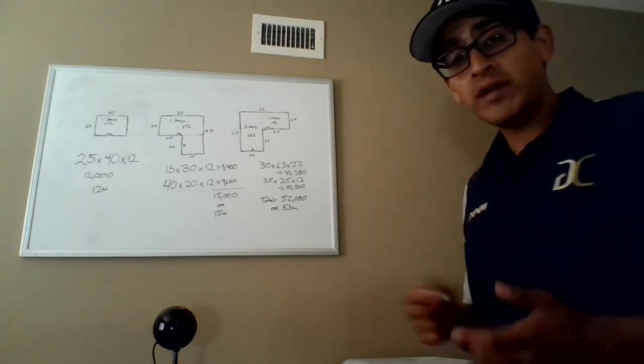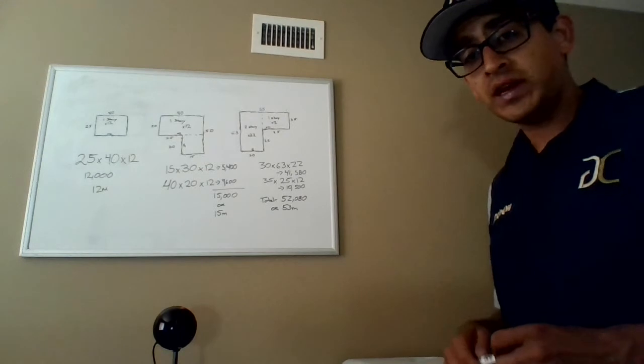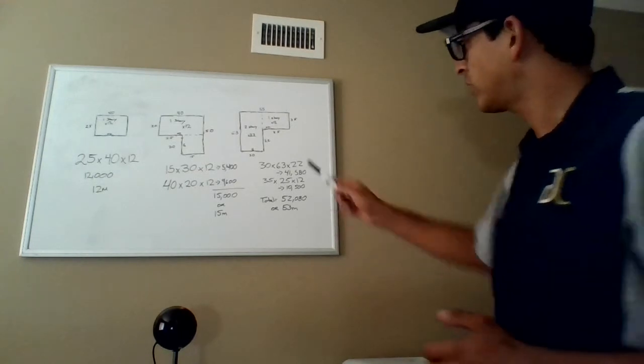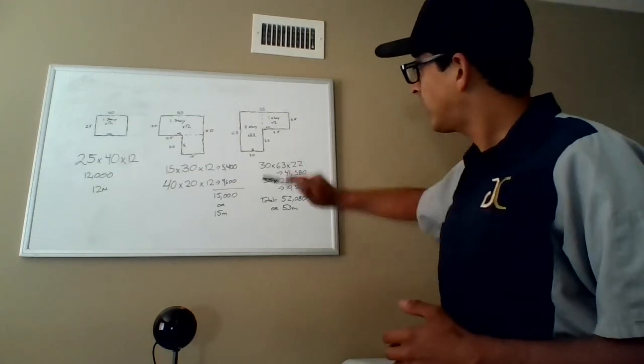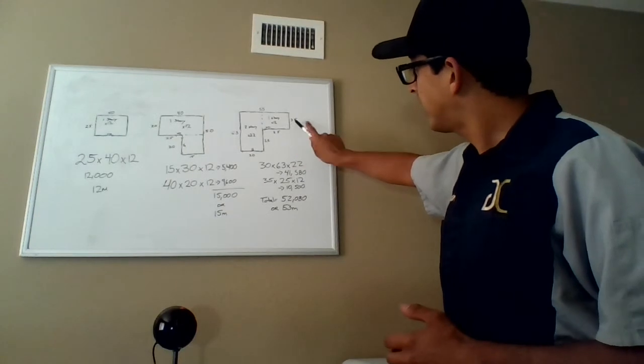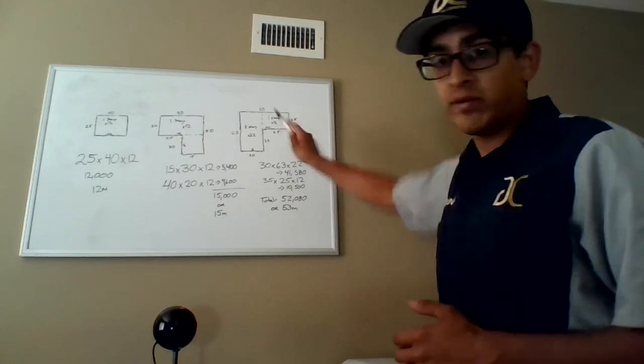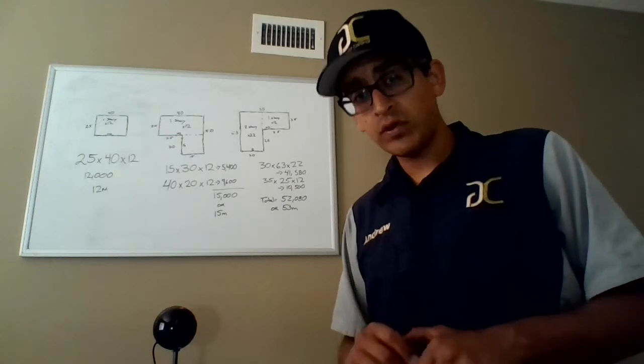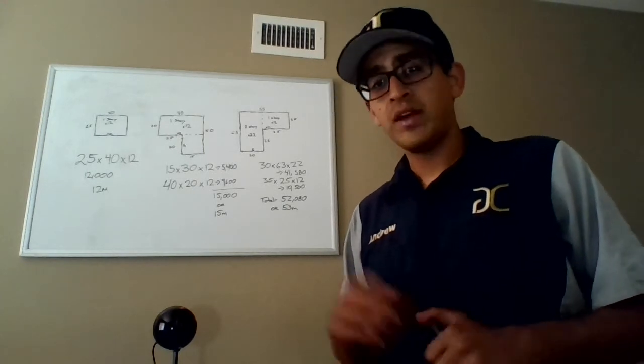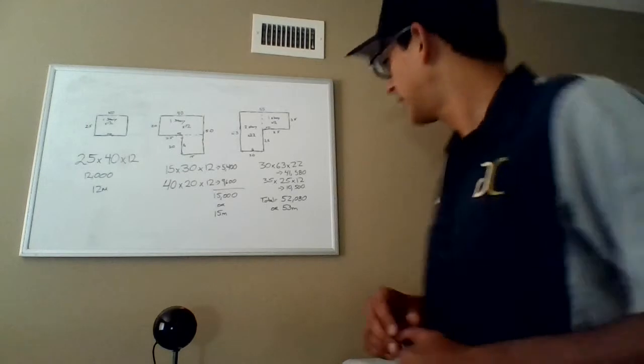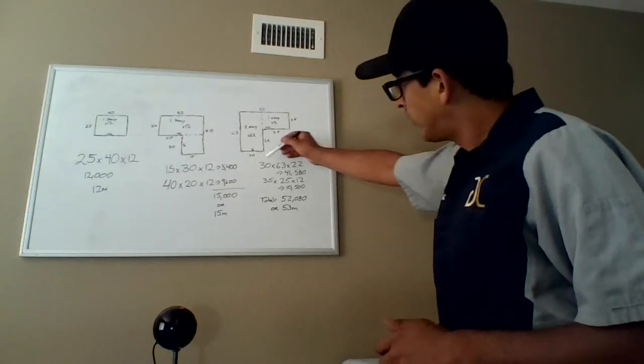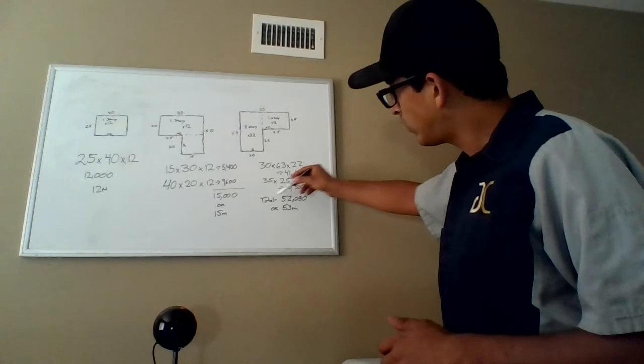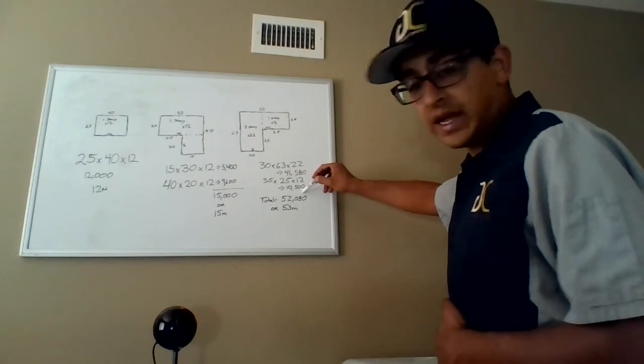Then we have to get the volume of the section that is one story, the other rectangle. This area right here, it's 25 by 35 by 12. Again, it's only one story. So 10 feet for the first floor and then two feet average height for the attic in that section. So if we multiply both of them, it's going to give us a total of 52,080.